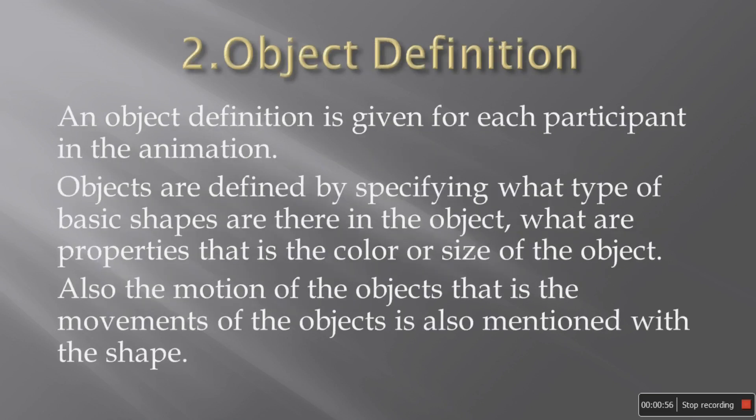Now second one is the object definition. Object definition is given for each participant in the animation. So object definition will have what kind of color the object has, what kind of shape the object has. What motion the objects are going to do for each object, the different motion we have to specify in the object definition itself.